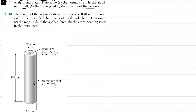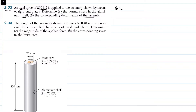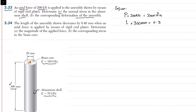The length of this assembly is 300 millimeter. First we write the given data: axial force P is equal to 200 kilonewton, which is 200 × 10³ newton. The length of the assembly is 300 millimeter, equal to 0.3 meter. Modulus of elasticity of aluminum is 70 GPa, equal to 70 × 10⁹ pascal.